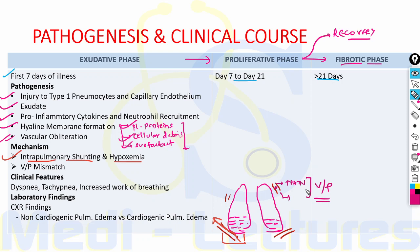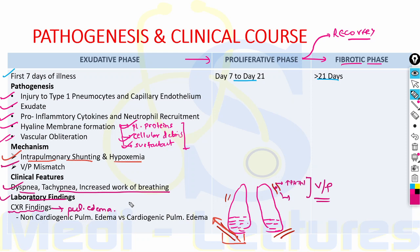Clinically, patients present with dyspnea and rapid shallow breathing, tachypnea, and increased work of breathing, ultimately leading to respiratory fatigue and respiratory failure. Laboratory findings are generally non-specific, indicative of the underlying clinical disorder. Chest radiography shows bilateral opacities consistent with pulmonary edema, involving around three-fourths of the lung fields.